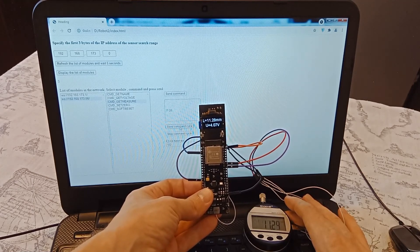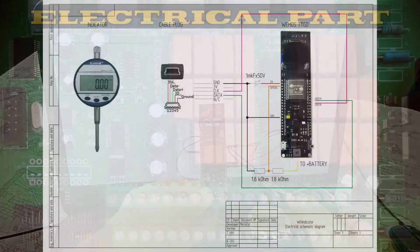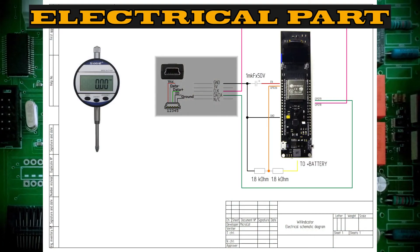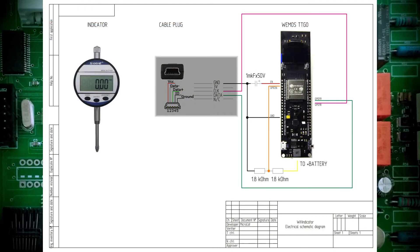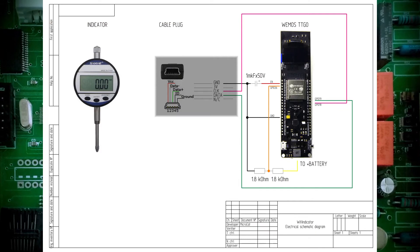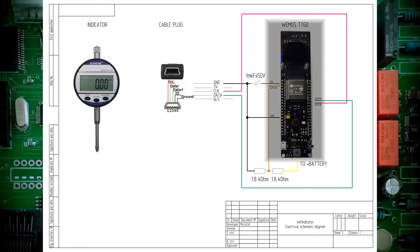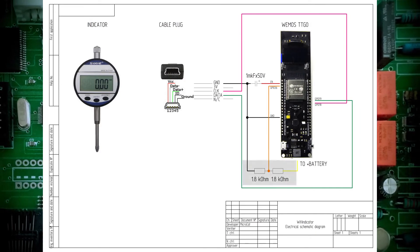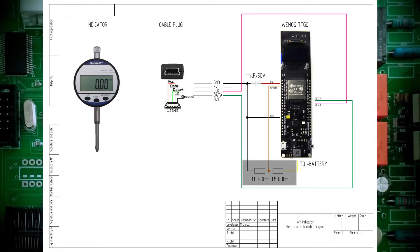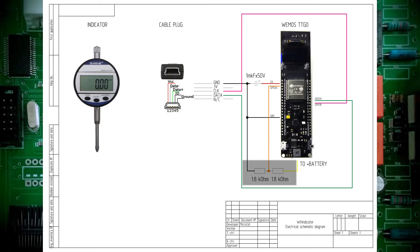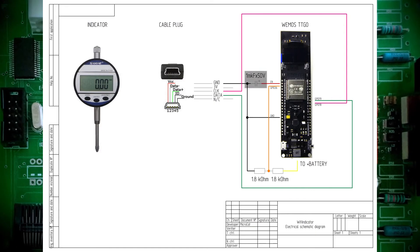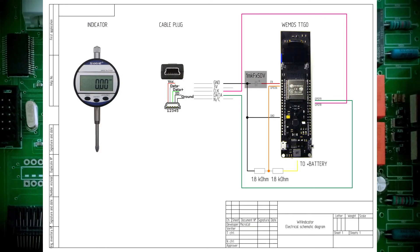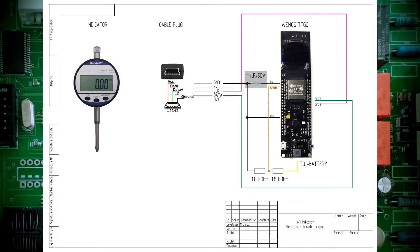Let's consider the electrical circuit. A non-standard USB cable with its own pinout is used to connect to the Shire indicator. Data and clock signals are sent to the board. Resistors are also connected to it to read the battery voltage, and a capacitor allows flashing without using the boot button.